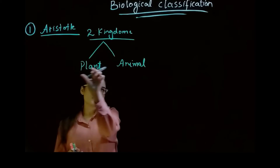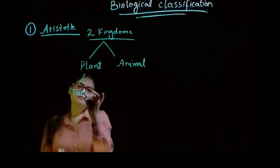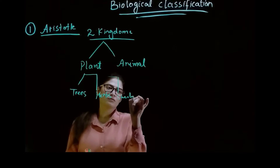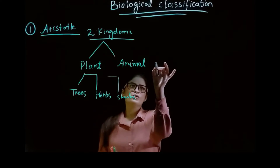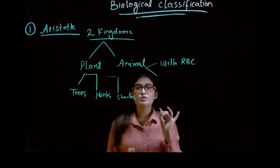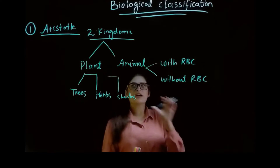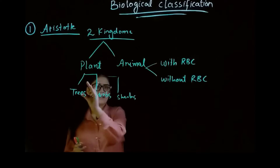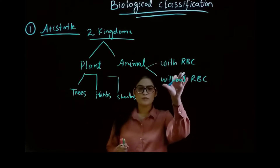Kingdom Plantae includes all the trees, herbs, and shrubs. Kingdom Animalia includes animals with RBC — that is, red blood cells — and animals without RBC. So according to Aristotle, all living organisms are divided into plant and animal kingdoms.